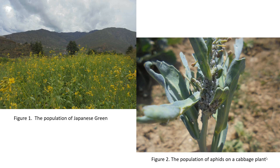Let's look at the examples of population. Figure 1 shows the population of Japanese green, which is a single species. Here, the individual plants share the same resources such as land, nutrition, aerial space, light, and water for their growth, development and reproduction, or for the completion of their life cycle. Similarly, they also share the same or similar constraints such as insect pests and diseases, or a massive shift in climatic conditions such as drought or excessive rain. At the same time, they depend on each other for survival.